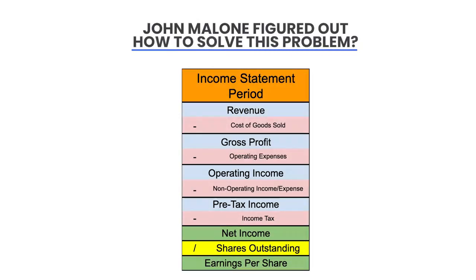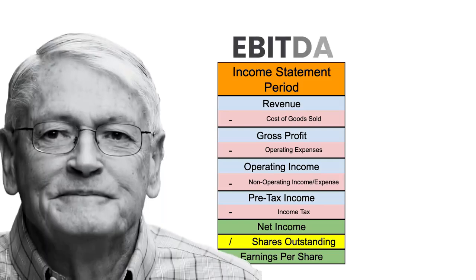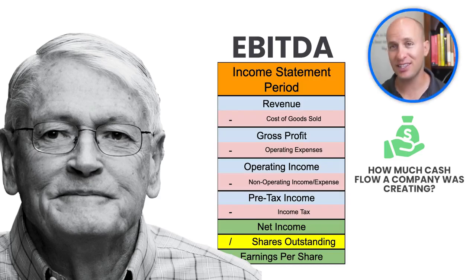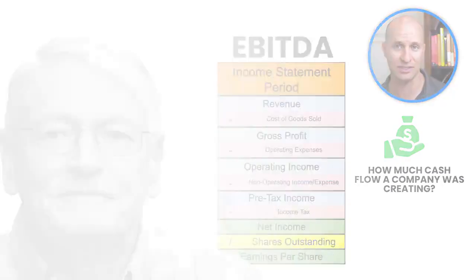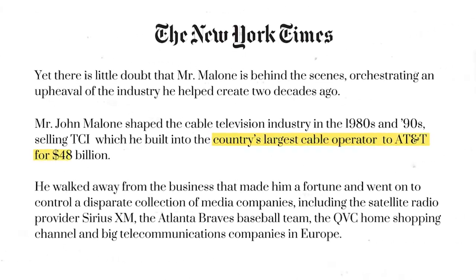John Malone solved this problem by convincing bankers to focus on the cash flow the business generated instead of net earnings. He began talking up his company's EBITDA, since it was an easy way to roughly measure cash flow — and since it excluded depreciation, interest, and taxes, it wasn't impacted by the way he was operating his business. Malone was hugely successful: he borrowed billions to buy other cable companies, generating massive returns for investors, and ultimately sold his business to AT&T in the late 1990s for $48 billion. Wall Street and private equity took notice, and EBITDA grew in popularity over time.